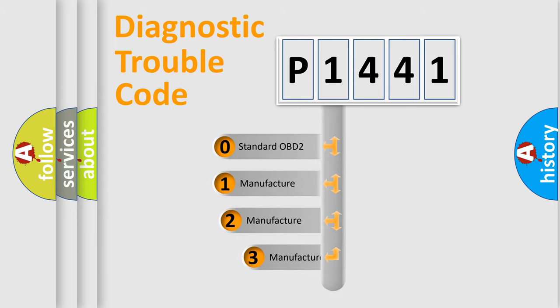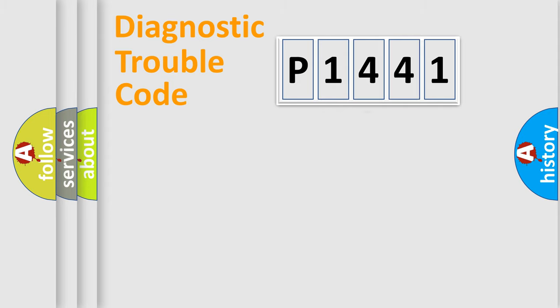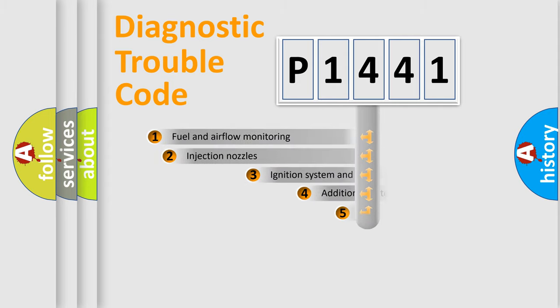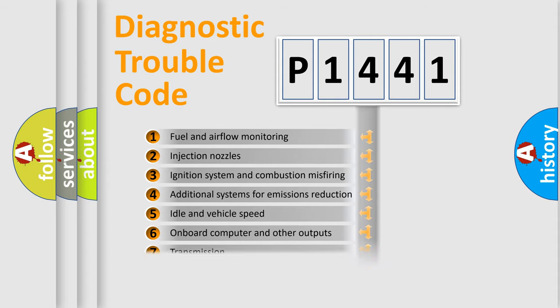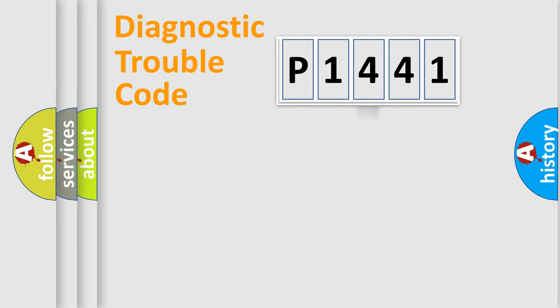If the second character is expressed as zero, it is a standardized error. In the case of numbers 1, 2, 3, it is a more specific expression of the car-specific error. The third character specifies a subset of errors. The distribution shown is valid only for the standardized DTC code.